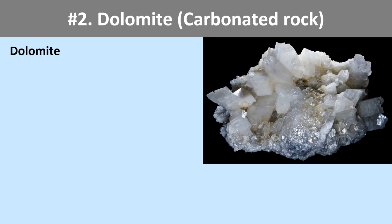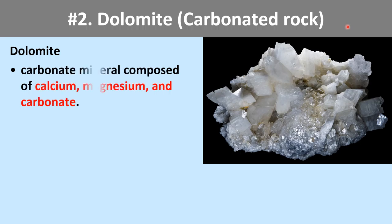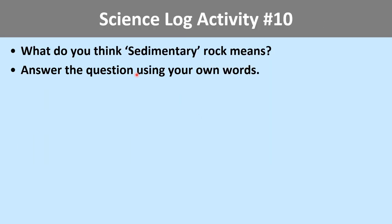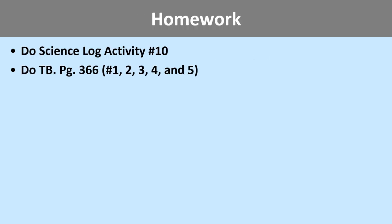The second mineral I want to go through is dolomite, which is known as a carbonate rock. You can see some parts are lustrous and some parts are a little foggy and pearly because it has a mixture of different chemicals. Dolomite is a carbonate mineral composed of calcium, magnesium, and carbonate, and it is one of those sedimentary rock samples — meaning it stacks layer by layer. I want you to do another Science Log activity as homework: answer what you think sedimentary rock means and we'll share that next time. Also do textbook questions 1 through 5 on page 366.